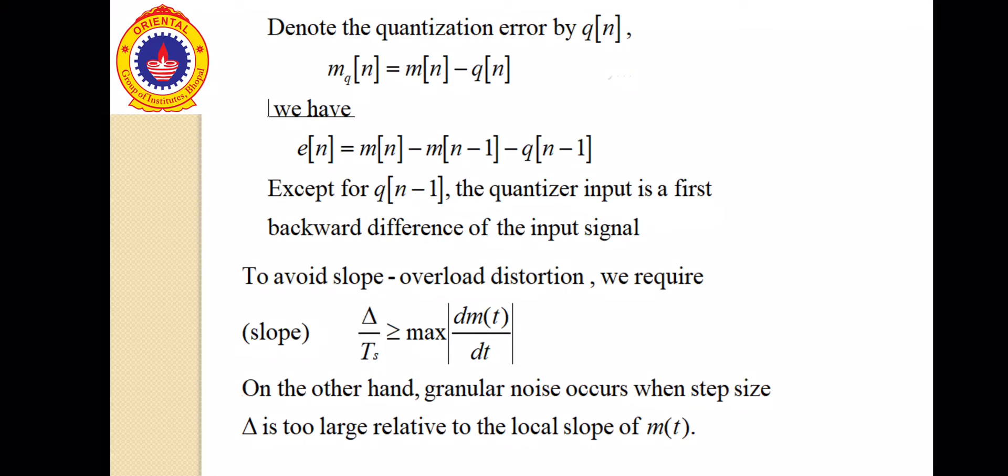Suppose the quantization error is denoted by q[n]. So, mq[n] equals m[n] minus q[n]. So, we have error equals m[n] minus m[n-1] minus q[n-1]. For q[n-1], the quantizer input is the first backward difference of the input signal. To avoid the Slope Overload Distortion, the condition is step size Delta by Ts always greater than or equal to maximum of d/dt m(t). On the other hand, Granular Noise occurs when the step size Delta is too large relative to the local slope of m(t). To avoid the conditions of Slope Overload Distortion and Granular Noise, these conditions have to be satisfied.